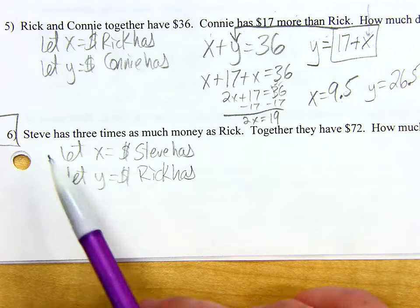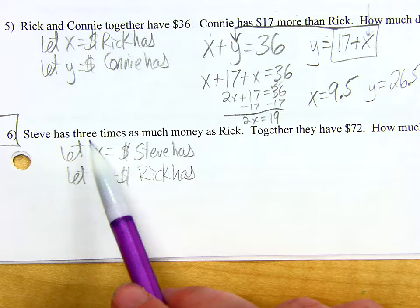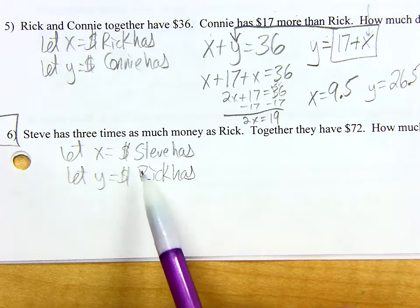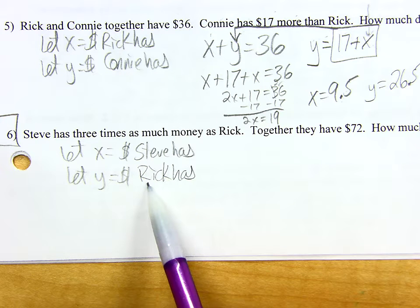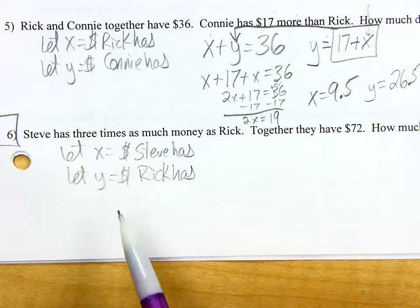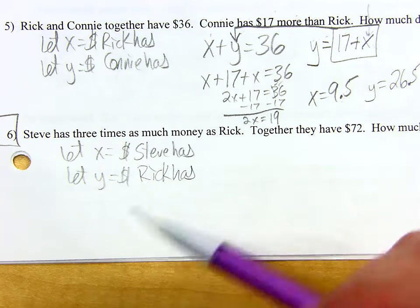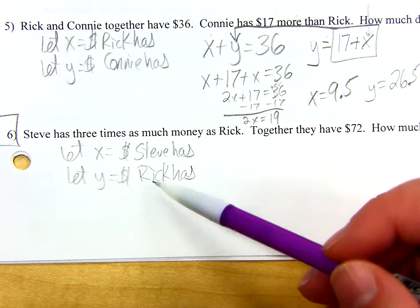Liliana, you were giving me an equation. Steve has three times as much money as Rick. I had it set up where X equals three — it seems wrong. Do you have it set up the same way I do? So it depends how you have this set up.